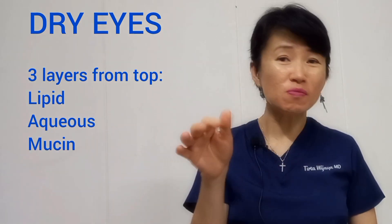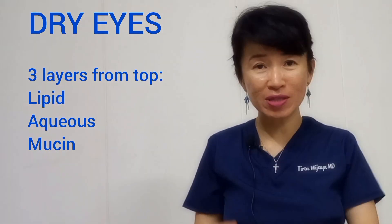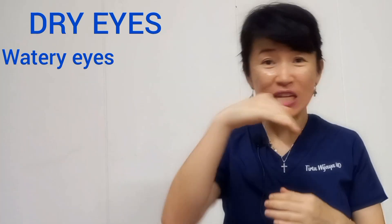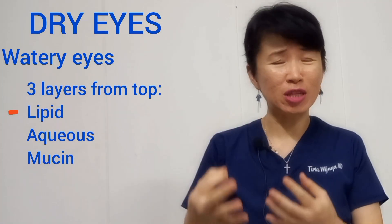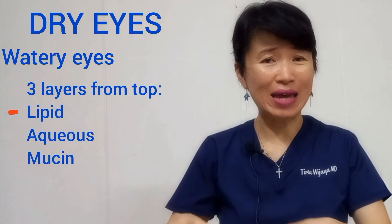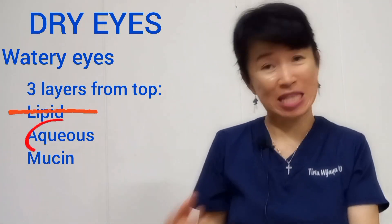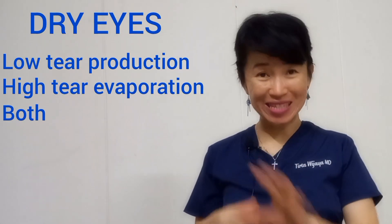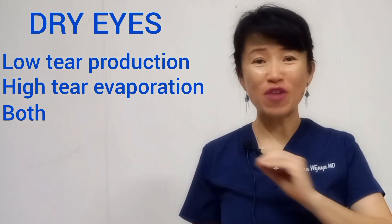Number two: dry eyes. Our cornea is covered with three layers of tears to smooth the surface, so we can see things more clearly and comfortably. In addition to blurry vision, dry eyes may also cause burning or stinging sensation, photophobia, and watery eyes. Watery eyes in dry eye disease happen because the eye cannot produce enough oil for the outer layer of the tear film, causing tears to evaporate too quickly, so the eye increases watery tear production to compensate. Dry eye disease occurs when there are not enough tears, or when tears evaporate too quickly, or both.